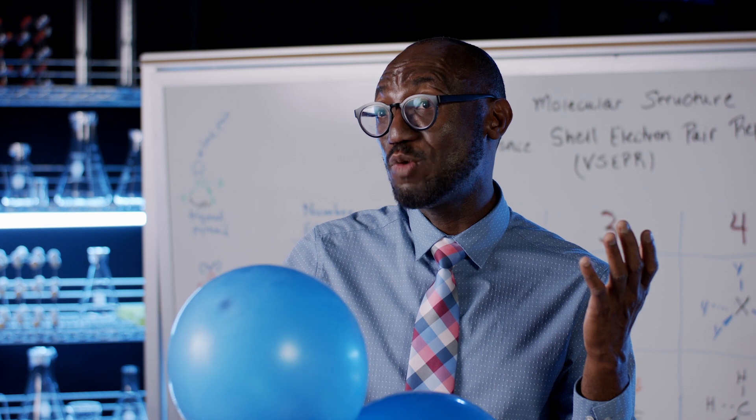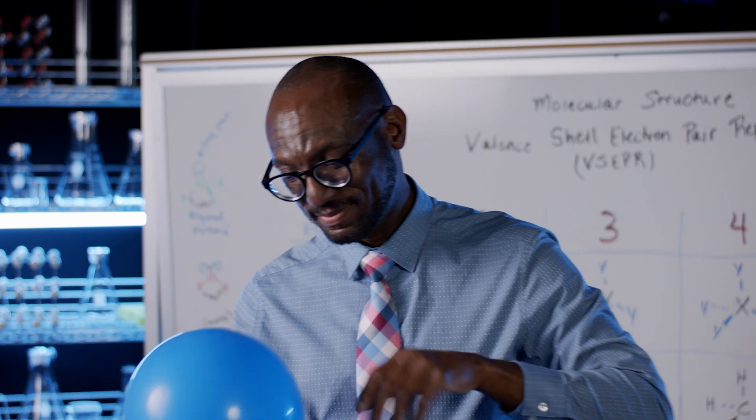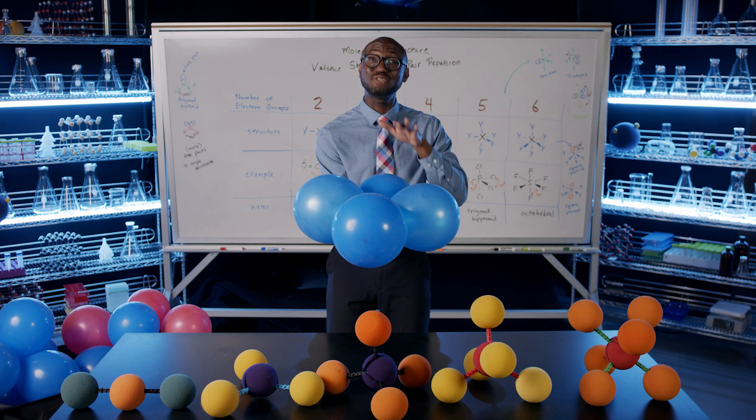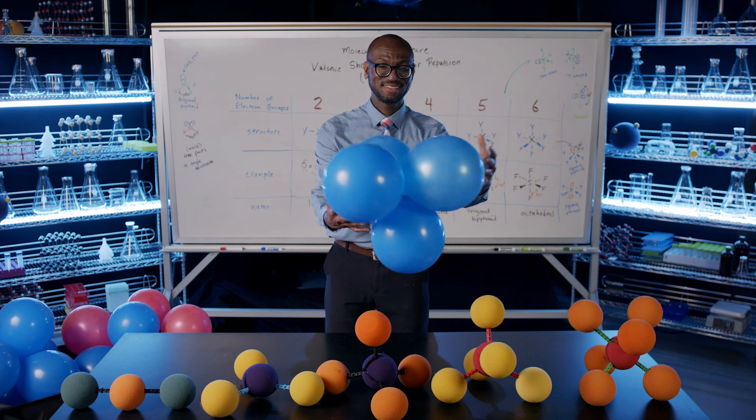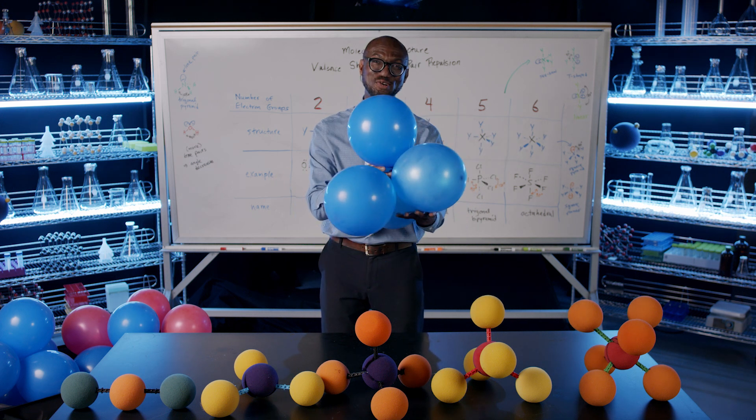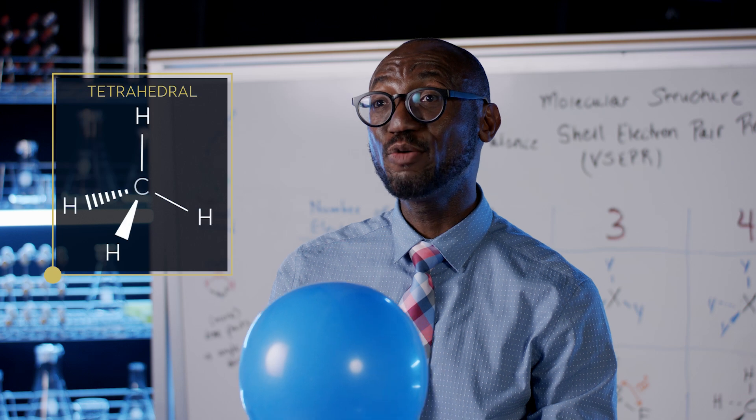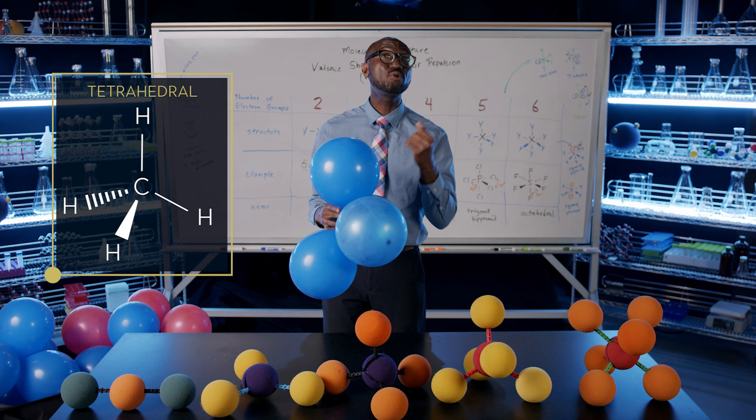What's three plus one? Four balloons. You'd think they would adopt a flat square. But after tossing this around, we get something more three-dimensional. This shape is called tetrahedral. The electron groups are at about 109-degree angles from each other, and we can show this as a model.